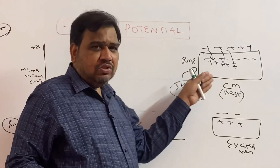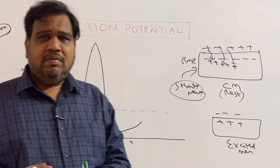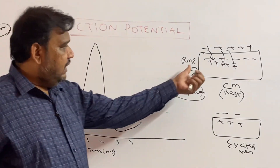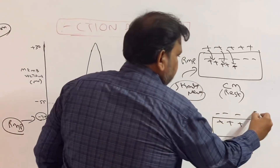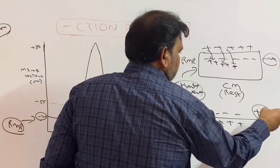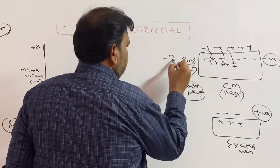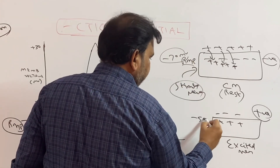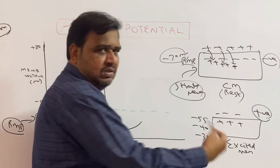Now I am giving a stimulus to the cell membrane. There is a change — a change in the potential difference. Compare these diagrams: here it is negative inside, and here it becomes more positive inside. So this is turning from minus 70 to minus 55, minus 40, minus 30 as the stimulus increases.